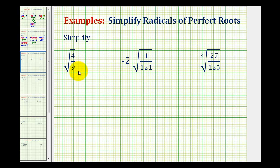We want to simplify the given radicals that contain fractions. So for the square root of 4 ninths, we can rewrite this as the square root of the numerator over the square root of the denominator.